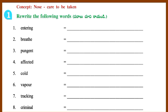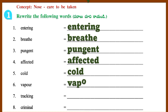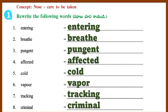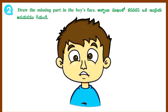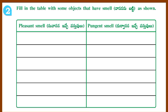Worksheet 3: Nose. Care to be taken. Section 1: Rewrite the following words: Affected, Pungent, Cold, Vapour, Tracking, Criminals. Section 2: Draw the missing part in the boy's face.